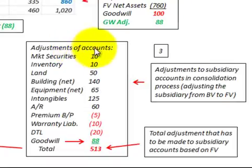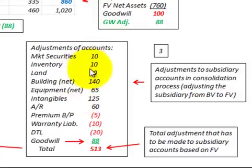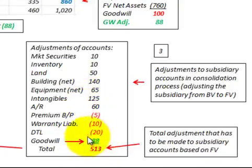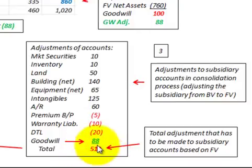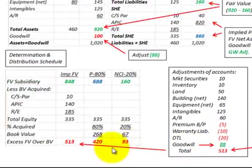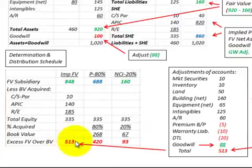Next we have to determine our adjustments for the asset and liability accounts for the subsidiary by comparing book value with estimated fair value. Those adjustments have been determined from the balance sheet. We also include goodwill at the new calculated amount of $88,000, so our total adjustments must equal $513,000 for the subsidiary, matching the total excess of fair value over book value of $513,000.